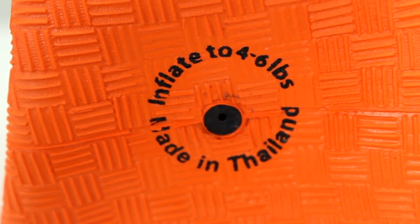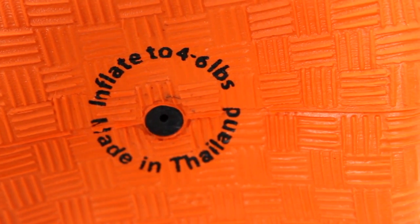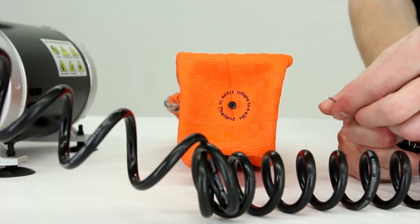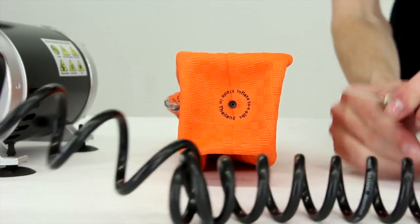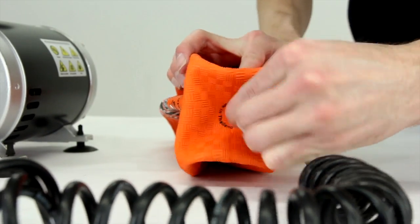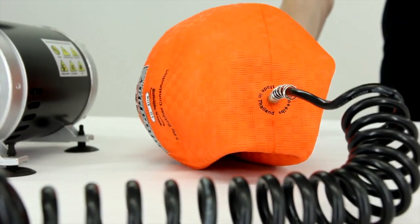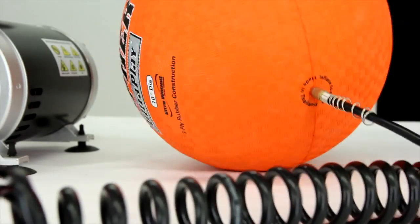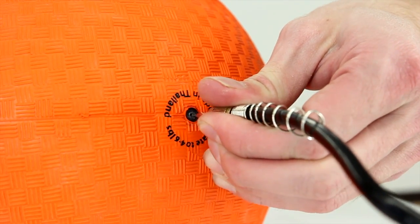Find the recommended inflation poundage printed on the ball near the valve. Moisten a standard ball needle and slowly insert it straight into the valve until it's flush with the ball and begin inflating. Stop inflating once the recommended poundage is reached. Remove the needle by slowly pulling it straight out.